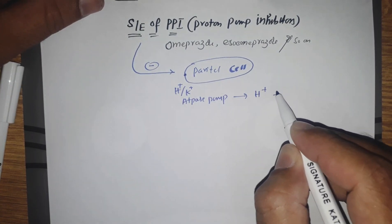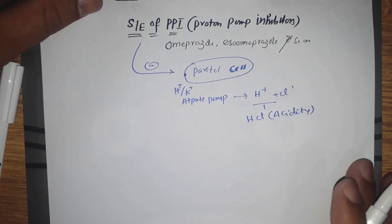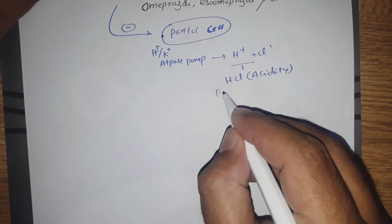the parietal cell produces hydrogen which combines with chloride to form HCl, which is acidity. Now, functions of acidity are: